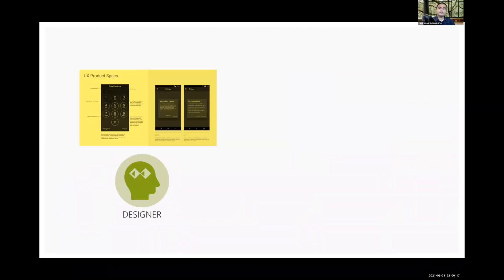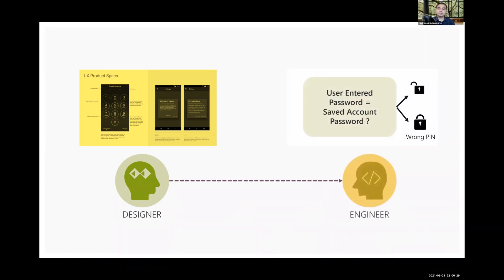At this point, you have fully specified the software design for a phone unlock user experience, including interface details, interaction, and the overall system behavior. You will then hand off the specifications to the engineer to build.